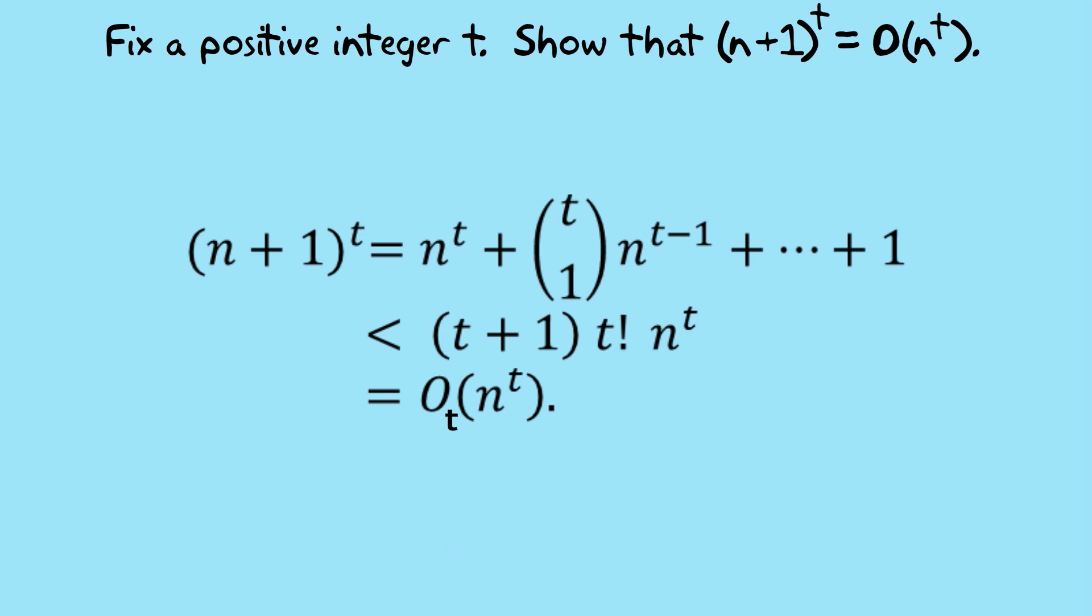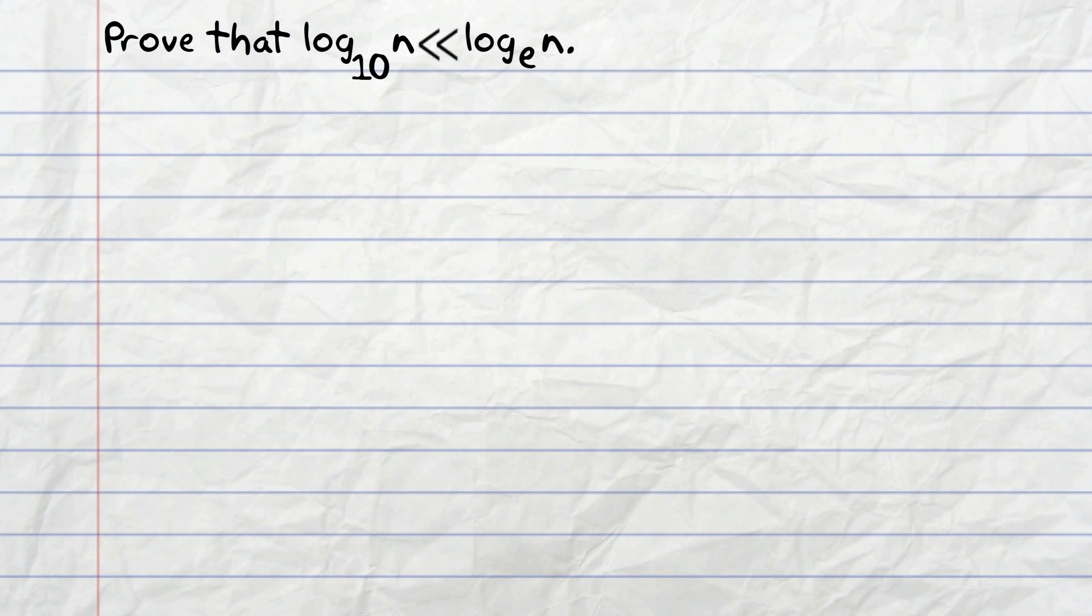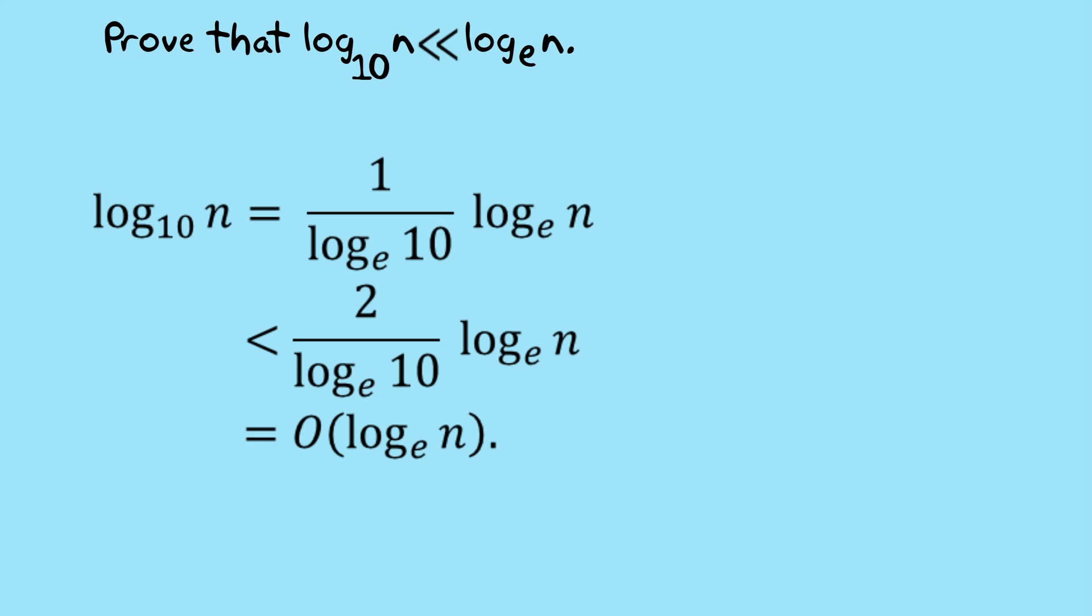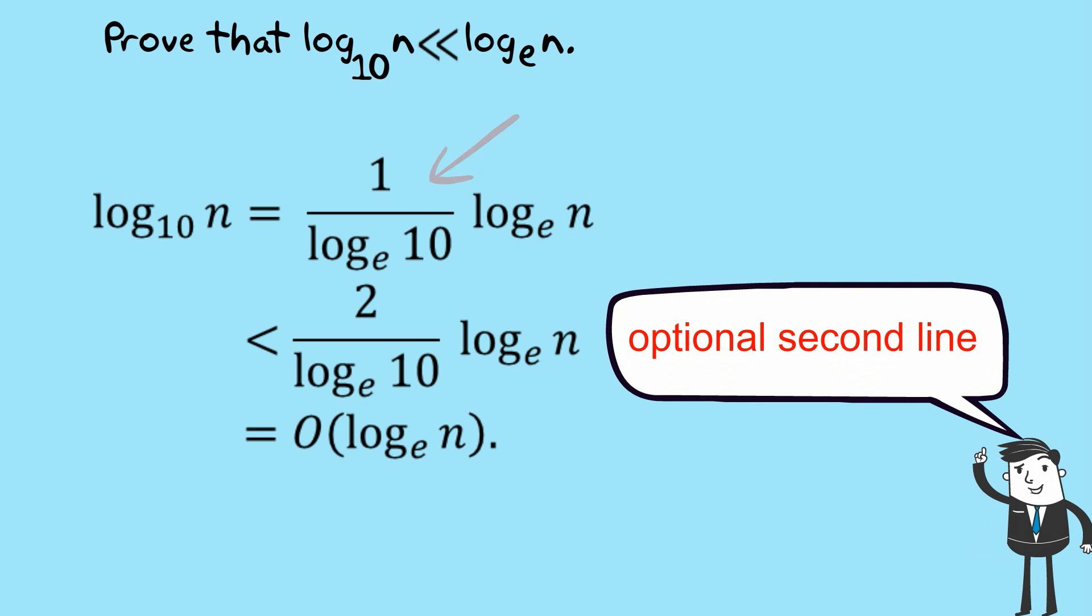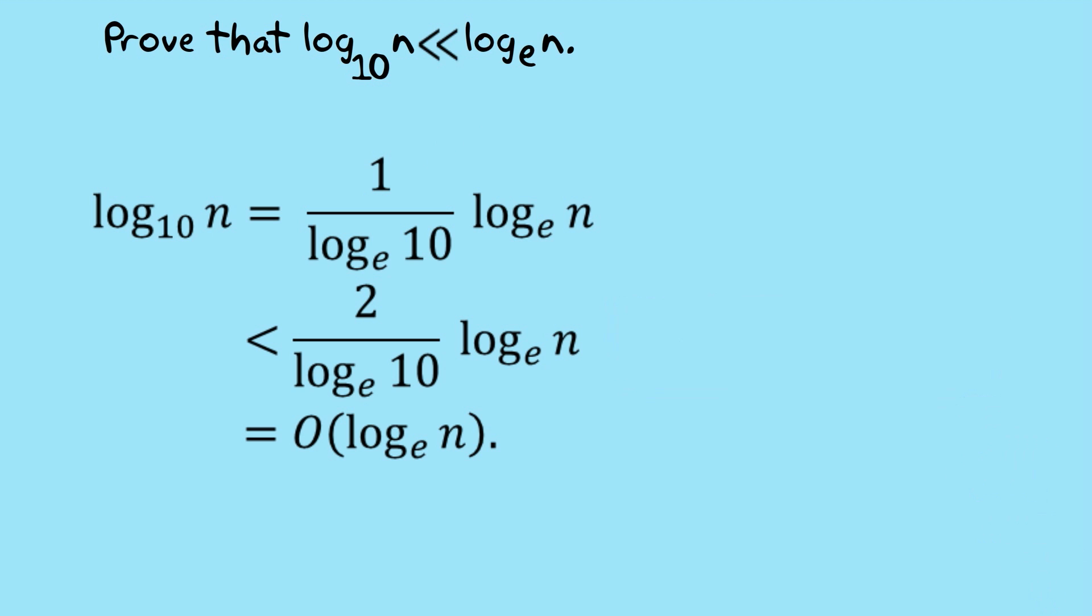The final question, I put this up because I wanted you to see the alternate notation for big O, which is this double less than notation. But we treat it just in the same way. So we have log to the base 10 n equals 1 on log 10 to the base e times log n to the base e. And this 1 on log 10 to the base e, that's a constant. So you may want to put in a second line where we say that it's less than 2 times 1 on log 10 to the base e times the log n to the base e, which gives us the expression in exactly the right form for the big O conclusion that it's big O of log n to the base e.